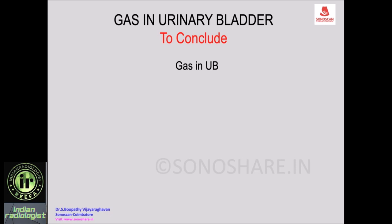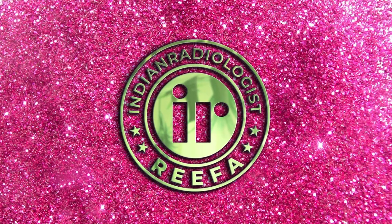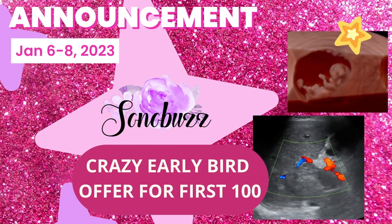To conclude: gas in the urinary bladder can be diagnosed with ease on ultrasound and confirmed by shifting patient position from lateral to lateral decubitus. Once confirmed, look for a fistula from the wall of the urinary bladder to the gut, or a vesicovaginal fistula. There can also be gas in the wall of the urinary bladder in emphysematous cystitis, and when gas escapes from the ureter you can look for emphysematous pyelonephritis. Thank you very much.